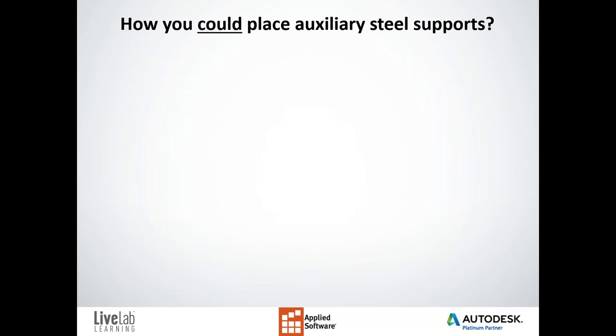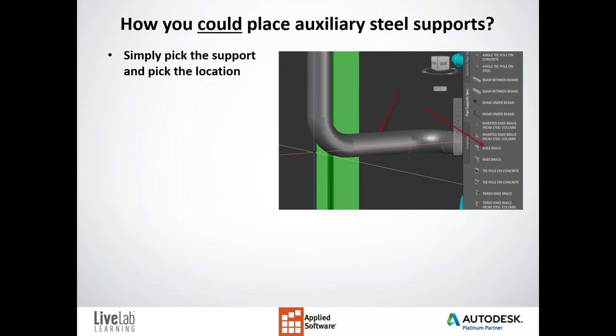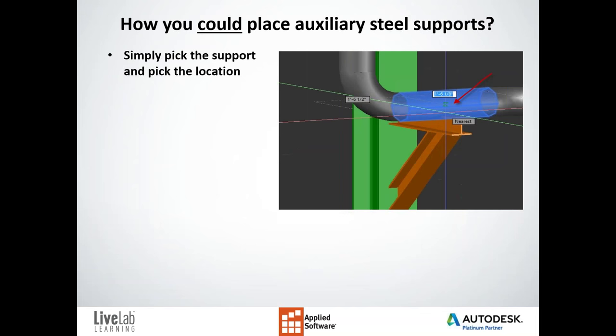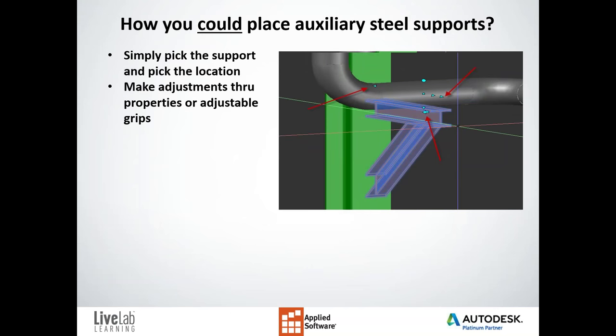This is how you could be placing auxiliary steel supports utilizing the service that we provide at Applied — generating code inside of Python, allowing you to have that component sitting in your tool palette ready to go. You simply pick the support from the tool palette, pick the location on the pipe that it needs to go, the component shows up, and then you're ready to start manipulating it.